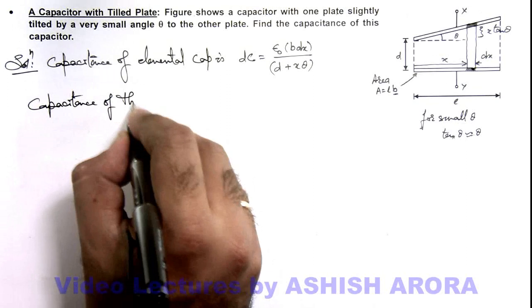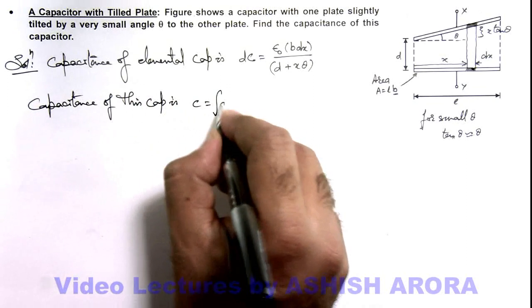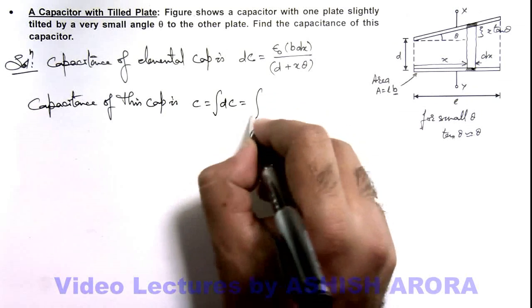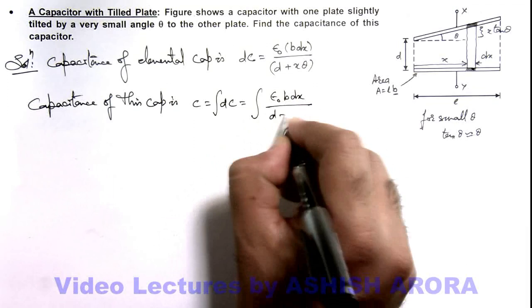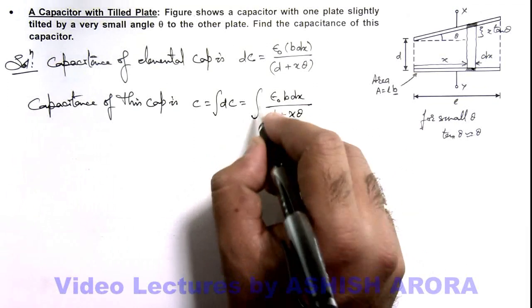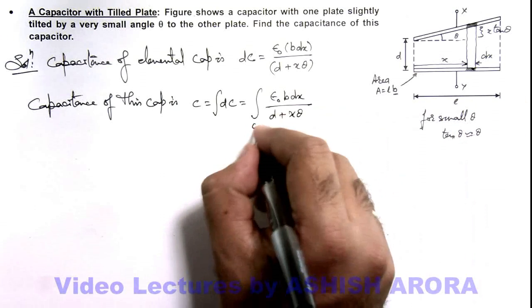So here we can write, capacitance of this capacitor is c, which can be written as integration of dc, which is integration of epsilon not b dx by d plus x theta, and that will be integrated for x within limits from zero to l.